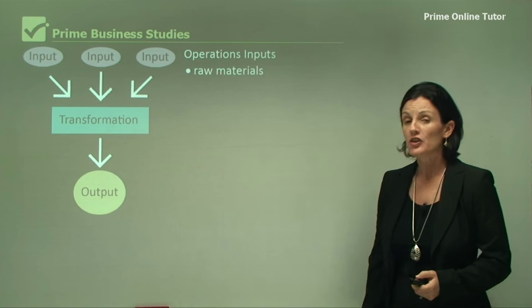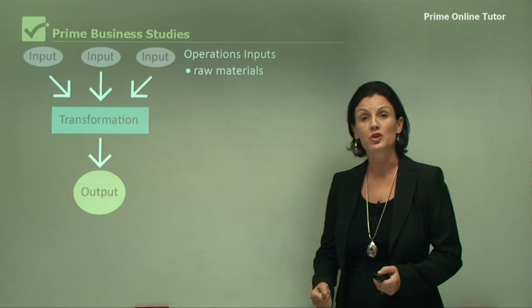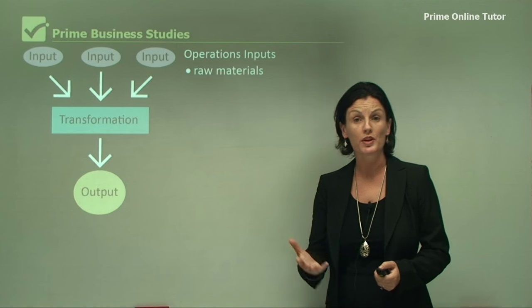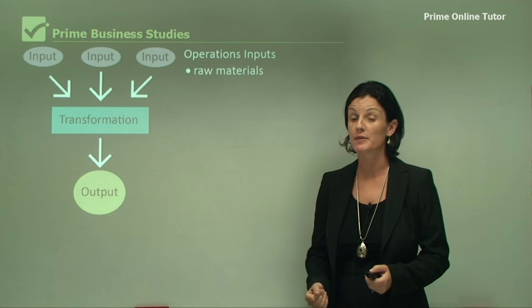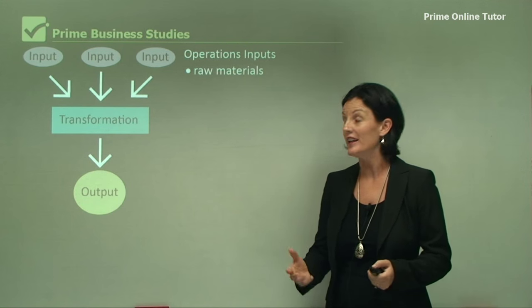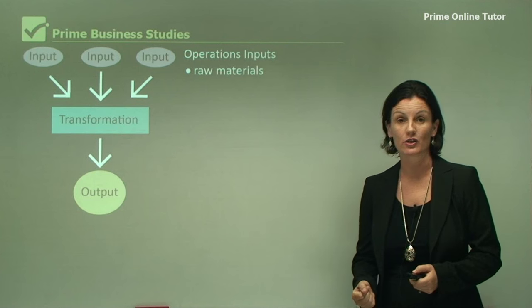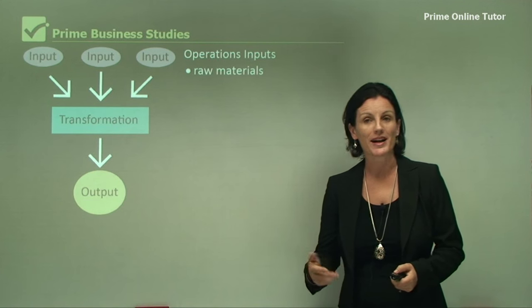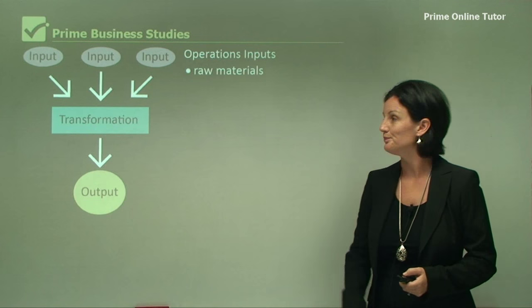The operation inputs will vary according to what is being produced, but generally speaking we have raw materials — for example, rubber and steel.